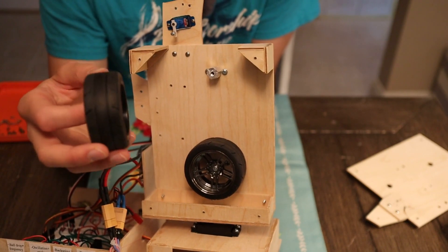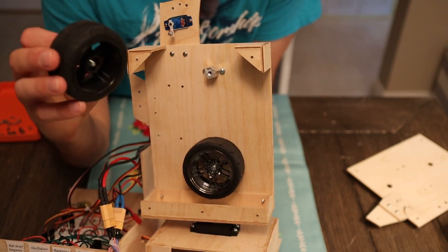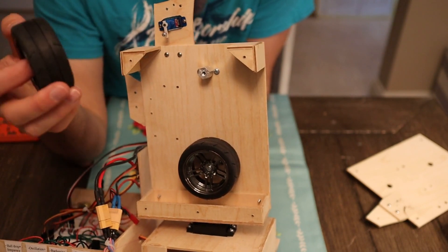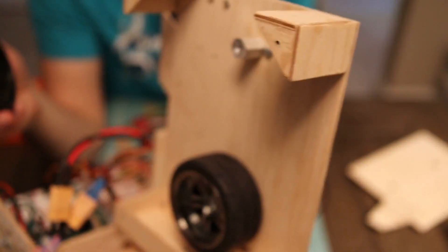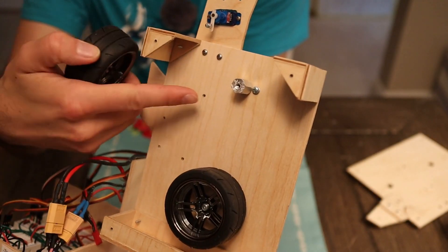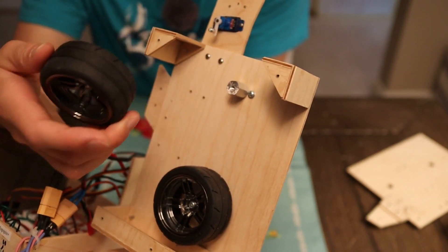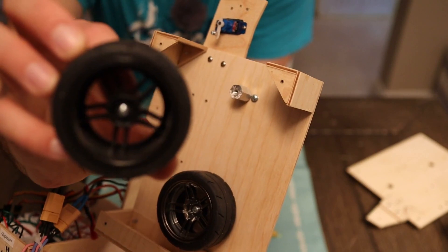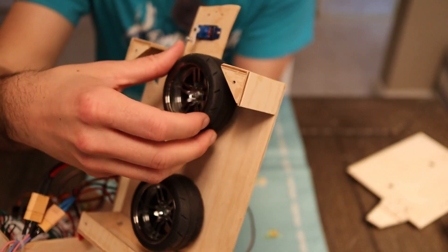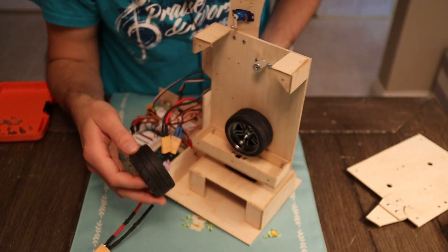So I ended up sanding those treads down, and that helped with that. So it doesn't leave any scratches. And then to mount these things to the shaft, these pieces are little hex adapters for a motor shaft, and so they attach to the hex mount of the wheel right there. So that just goes right on like that, and then you screw it in.